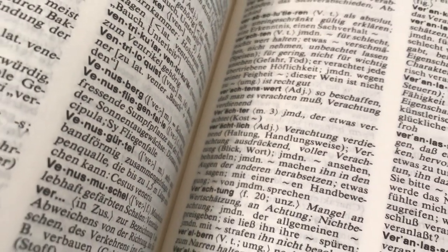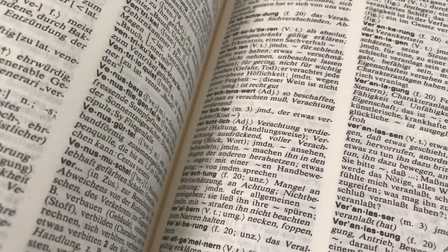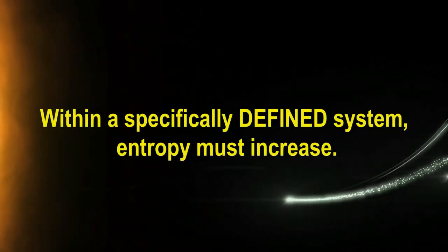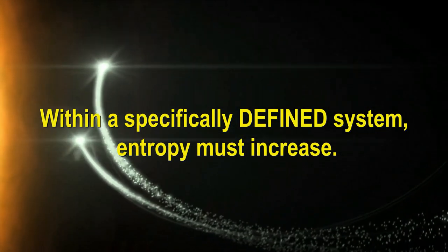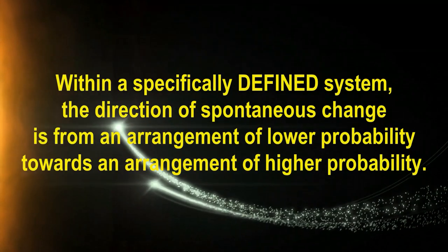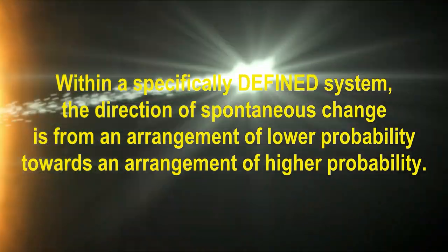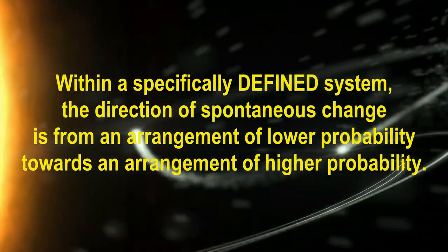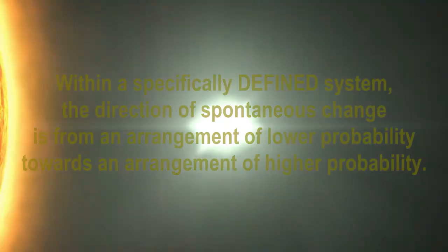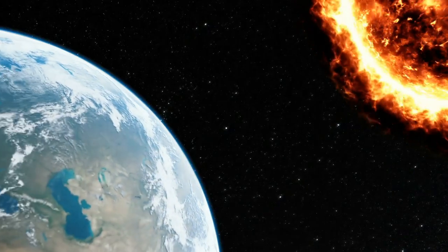To see how this works, substitute the words 'defined system' for 'closed system' and it will make more sense to you. Within a specifically defined system, entropy must increase. Or, within a specifically defined system, the direction of spontaneous change is from an arrangement of lower probability towards an arrangement of higher probability. Starting to make more sense?